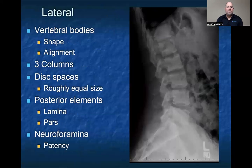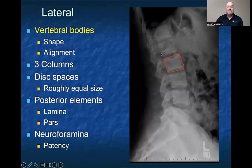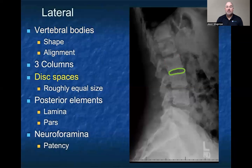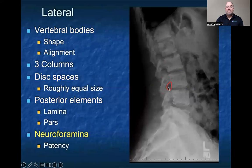On the lateral x-ray, you want to look at the vertebral bodies. We'll talk about the three columns, the disc spaces, the posterior elements, and the neuroforamina. Specifically on the vertebral bodies, you want to look at the shape — make sure that they're square, that there's not any wedging either anteriorly or posteriorly, and that most of them are shaped about the same. Check alignment of both the anterior and posterior vertebral bodies. This plays into our three-column model for fractures: you want to make sure you're paying attention to the anterior, middle, and posterior columns. Look at the disc spaces — make sure they're roughly equal in size and robust. Look at the posterior elements, the lamina and the pars interarticularis. And the neuroforamina — you want to make sure they're patent, as osteophytes can impinge those exiting nerve roots.